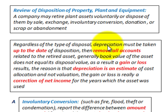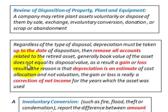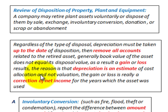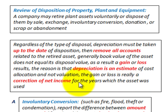Regardless of the type of disposal, depreciation must be taken up to the date of the disposition. Then remove all the accounts related to the retired asset. Generally the book value of the asset does not equal its disposal value, and as a result a gain or loss results. The reason is that depreciation is an estimate of the cost allocated and not a valuation. The gain or loss is really a correction to our net income for the years which the asset was used.